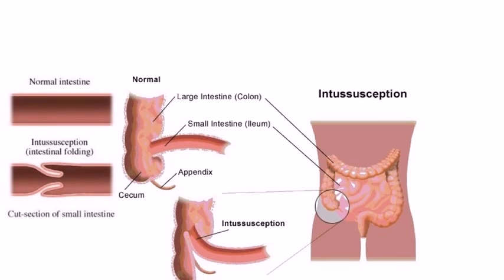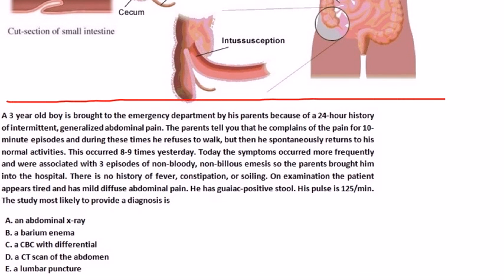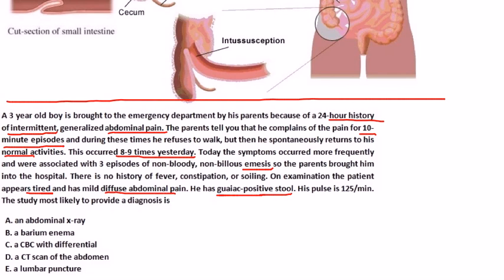Now for the clinical vignette. A three-year-old boy is brought to the emergency department with a 24-hour history of intermittent generalized abdominal pain. He complains of pain in 10-minute episodes, refuses to walk, but then spontaneously returns to normal activities — occurring 8 to 9 times the previous day. Today the symptoms became more frequent and were associated with three episodes of non-bloody, non-bilious emesis. On exam, the patient appears tired with mild diffuse abdominal pain and GUAC-positive stool. His pulse is 125. The question asks: what study is most likely to provide the diagnosis?